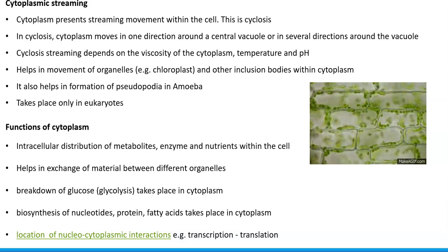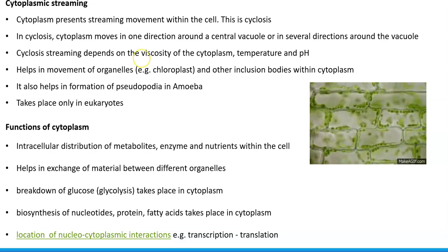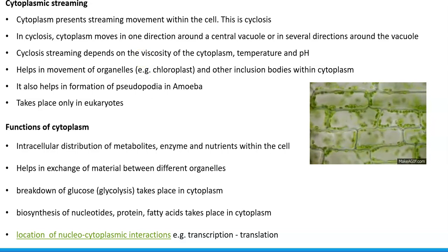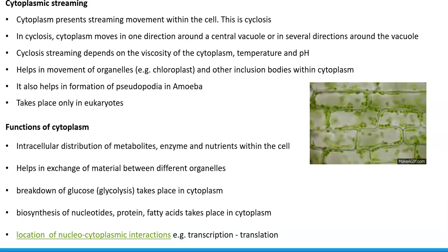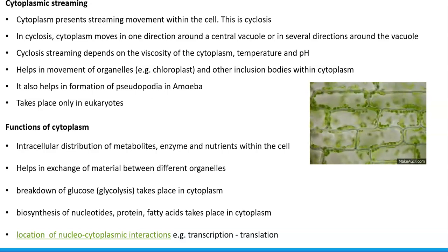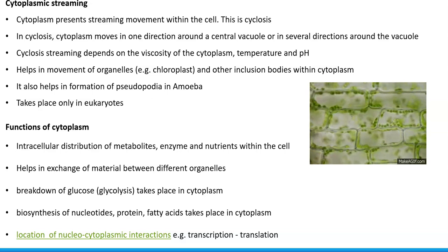Cyclosis streaming depends on factors such as viscosity of the cytoplasm, temperature, and pH of the cytoplasm. The cytoplasmic streaming mainly helps in the movement of organelles like chloroplasts, as shown on the right-hand side, and other inclusion bodies within the cytoplasm.